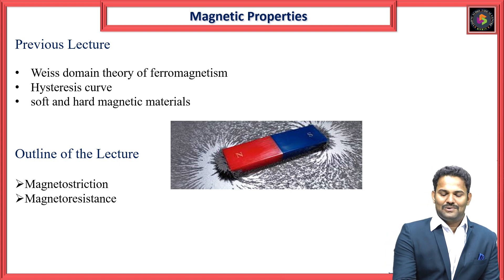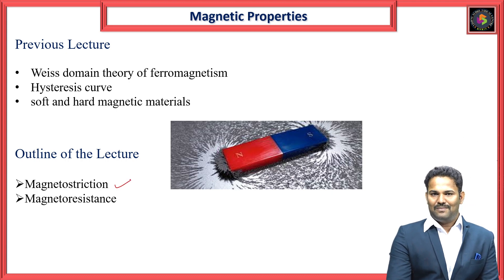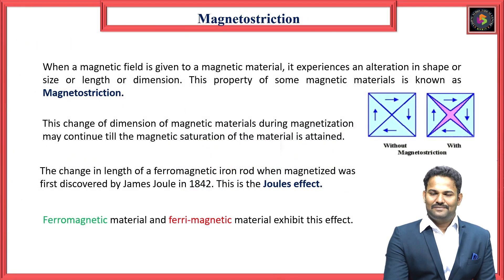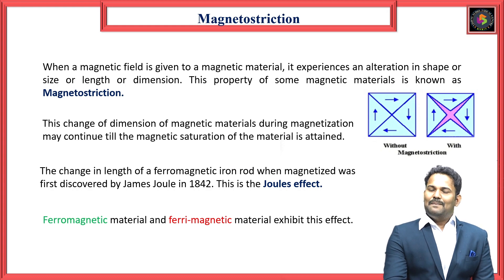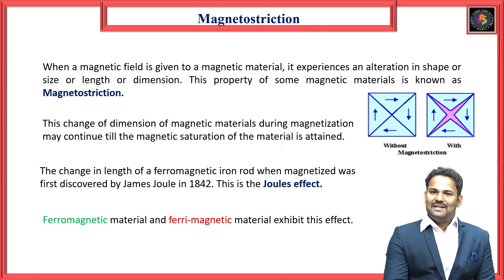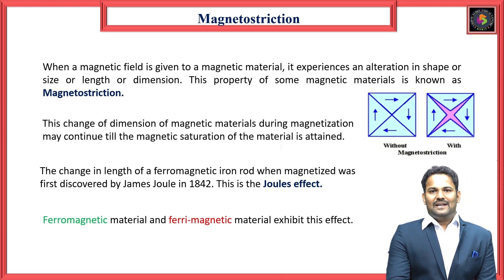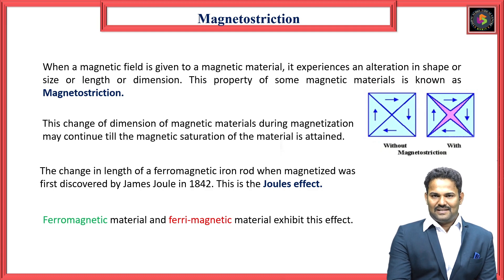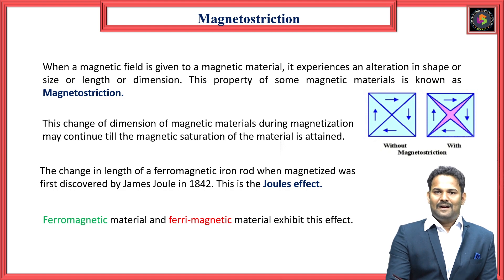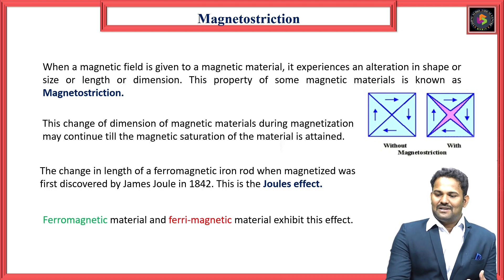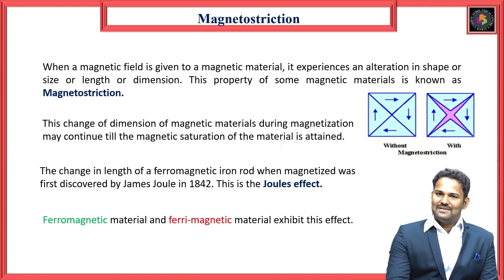Today we will discuss about magnetostriction as well as the magnetoresistance of ferromagnetic materials. What is magnetostriction? When a magnetic field is applied to a magnetic material, the material becomes magnetized. Before the magnetization process, the atoms or molecules inside the material start to vibrate. These vibrations develop changes in the size, shape, length, or dimension of the material. Such a change in size, shape, or dimension is known as magnetostriction.